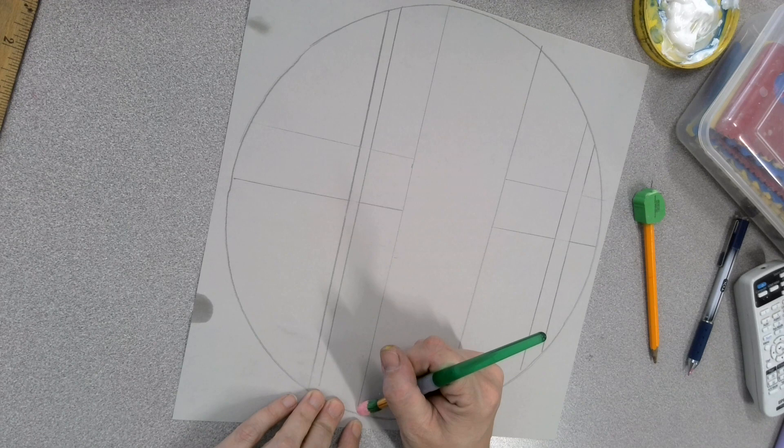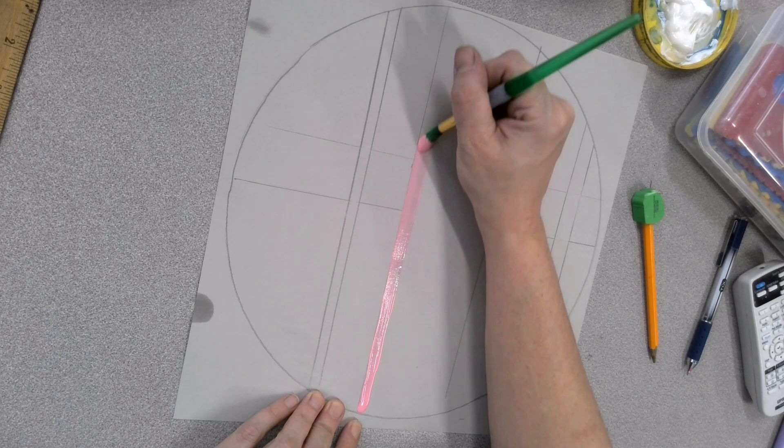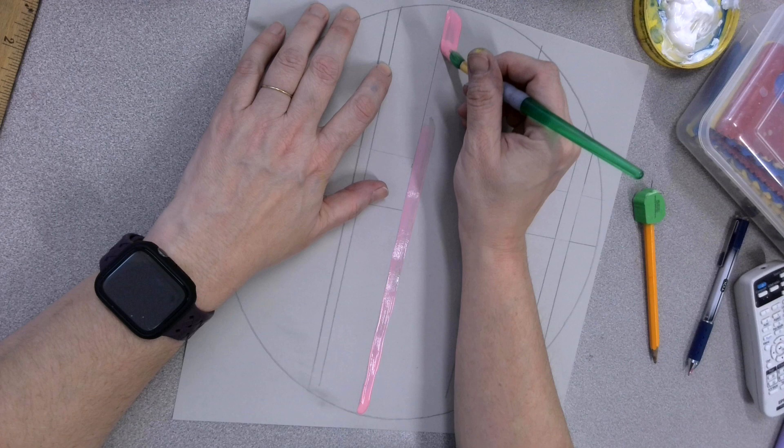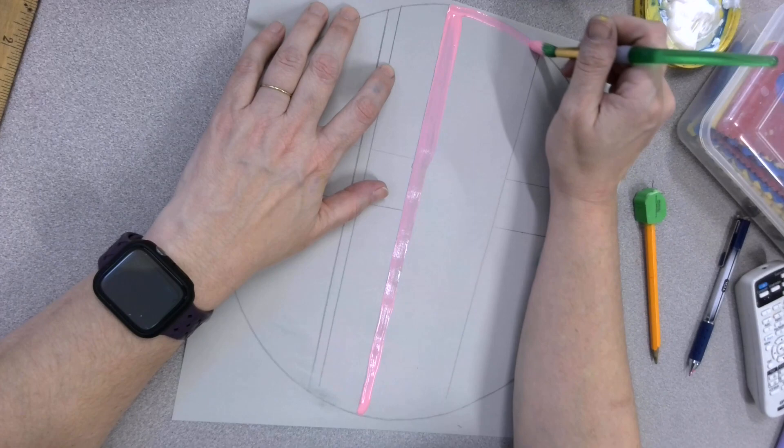So I like to do it like this. So I can already tell this pink is going to need two coats. How do you think I can tell that? You can see the paper through it.